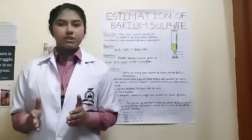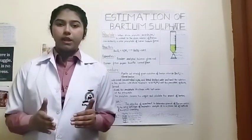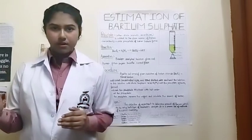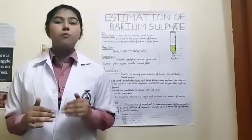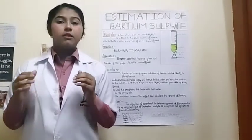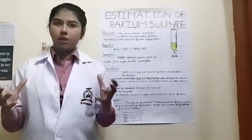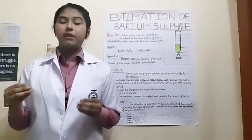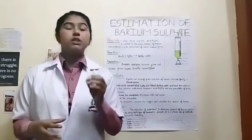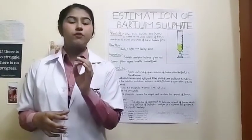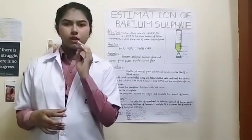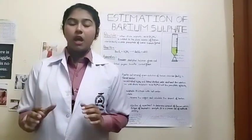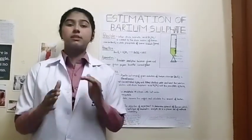Then cover it and digest it in the oven at a temperature of 80 to 85 degrees Celsius for almost 16 hours. Then filter it while it is still hot through a sintered glass filter. Then wash the precipitate with a 0.5% solution and then wash it with 2 ml of water. Now the procedure is completed.